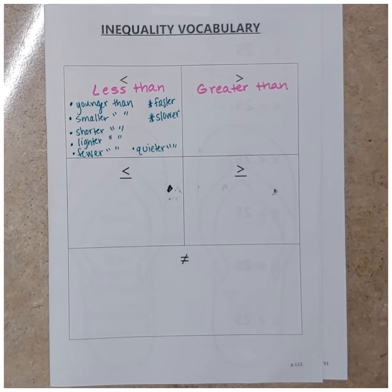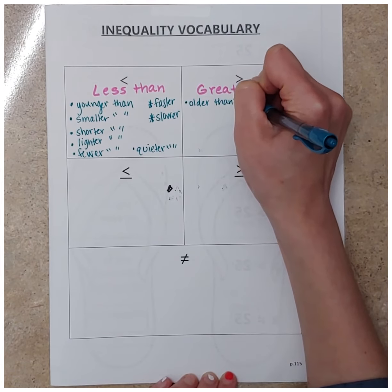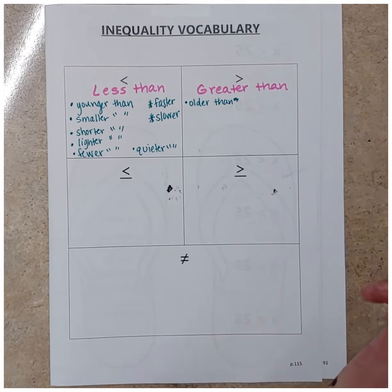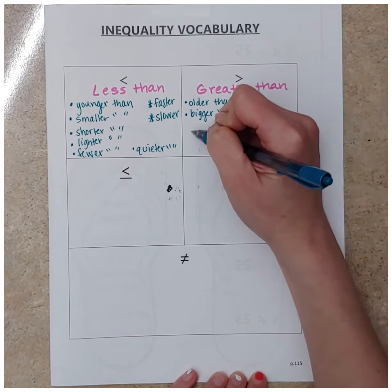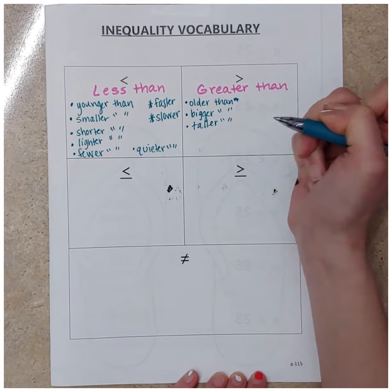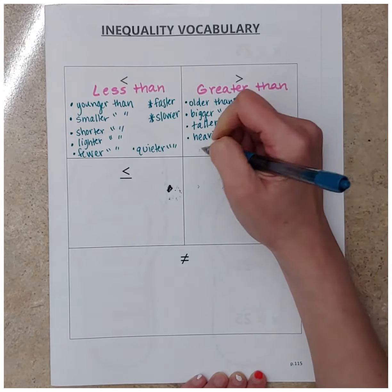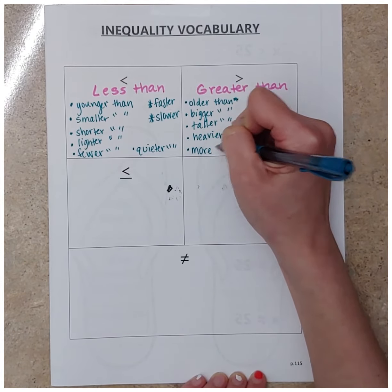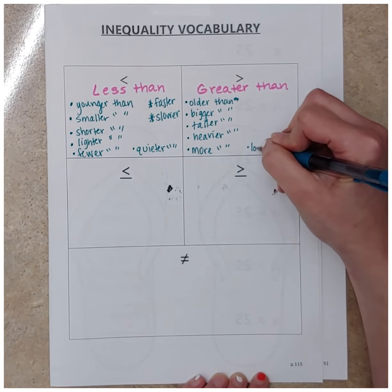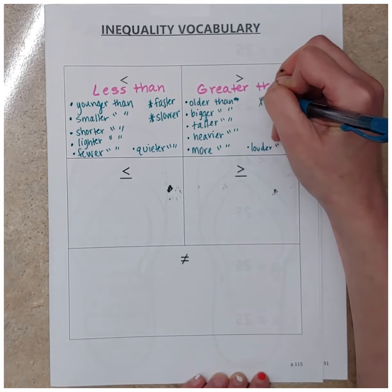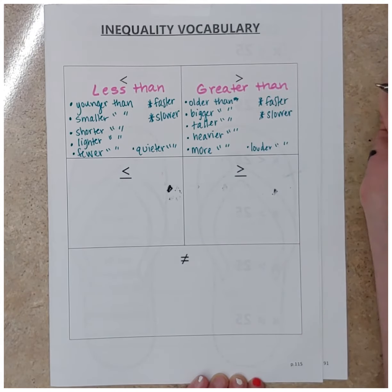So then we're going to work with just the opposites for greater than. Instead of 'younger than,' we've got 'older than.' Instead of 'smaller,' we're going to have 'bigger.' Instead of 'shorter,' we're going to have 'taller.' Instead of 'lighter,' maybe 'heavier' — like a heavier weight in a science experiment. Or we might have 'more,' like a team scored more points, and the opposite of 'quieter' would be 'louder' — higher decibel reading. And again, we'll add 'faster and slower' and talk about different scenarios in class.